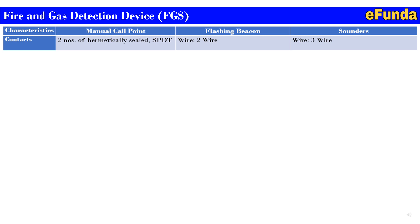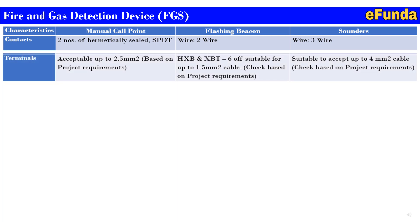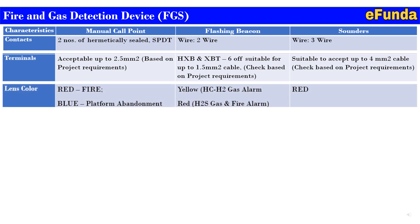For contacts, the manual call point uses two hermetically sealed SPDT contacts. For the flashing beacon, it is a two-wire connection. The sounder is a three-wire connection. Terminals for the manual call point are acceptable up to 2.5 sq mm based on project requirement. For the flashing beacon, HXB or XBT cable of 1 to 1.5 sq mm is suitable; up to 4 sq mm cable based on project requirement for the sounder terminal.